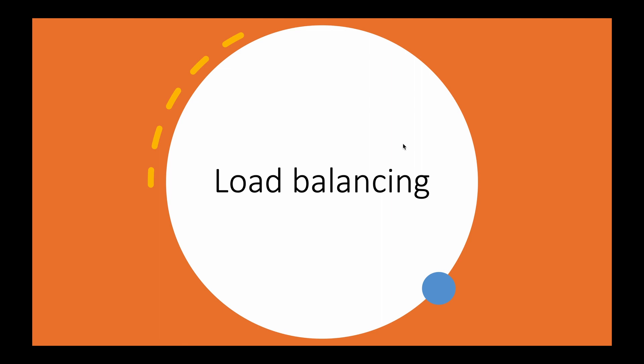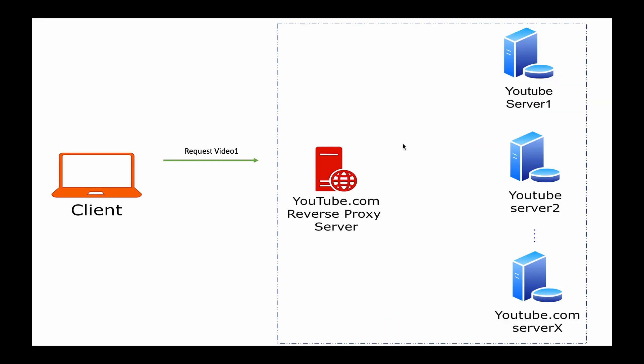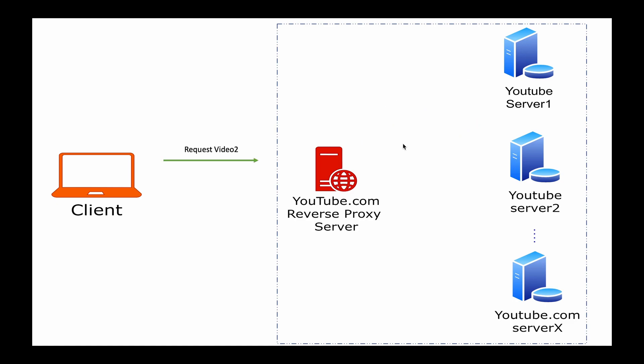One of the biggest advantages of reverse proxy is load balancing. The reverse proxy can use any load balancing algorithm like round robin, resource-based, etc. The advantage of load balancing is that it can help in evenly distributing the traffic among the servers, which leads to increased reliability and availability. For example, in this case, video two gets returned from YouTube server two.